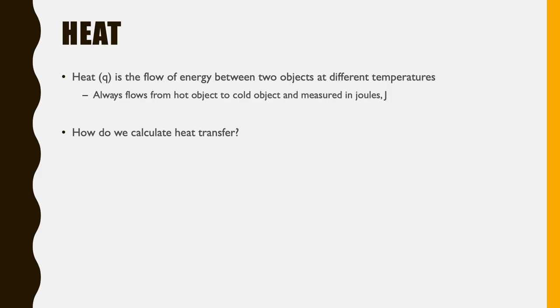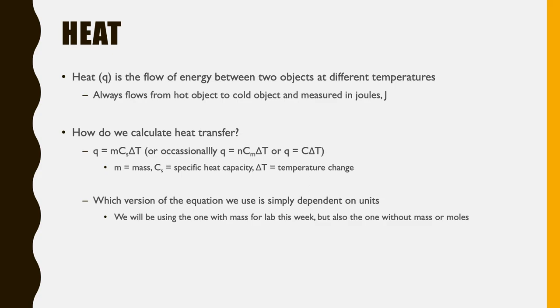The main equation for calculating heat or energy involved with heat transfer is Q equals mc delta T — specifically C sub s here. Mass (m) will usually be in grams. C sub s is what we call specific heat capacity. Pay close attention to units on this constant: if it's joules per gram degree Celsius, that tells you mass is needed in the equation. Delta T, the temperature change, must always be calculated as final temperature minus initial temperature. Getting that order wrong will mess up the sign conventions for heat.